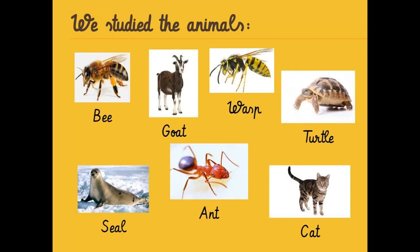Look at more animals that you know. We have a bee. We have a goat. We can also see a wasp. We can also see a turtle. Then look at the seal. Then you have an ant. And then we can see a beautiful cat.